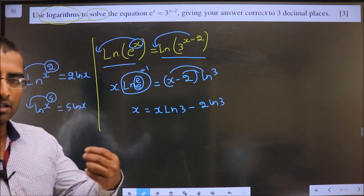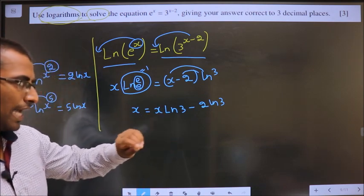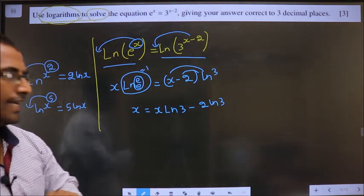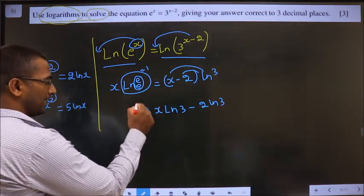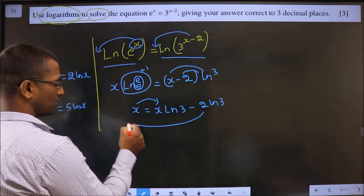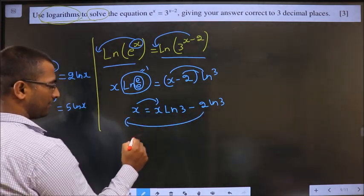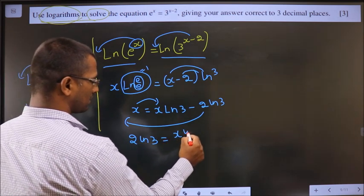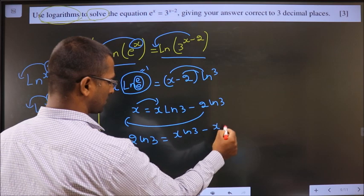We are simplifying to calculate x. So now all x terms one side. Let us say I am taking this here and this on this side. So here negative, it will become positive. 2 ln 3 is equal to x ln 3 minus x.